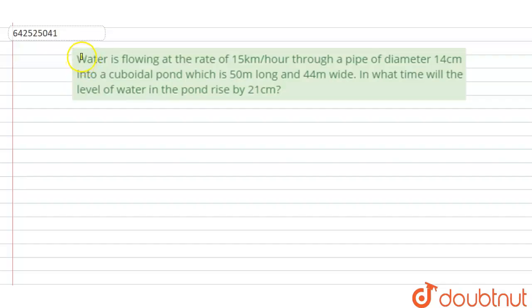Hello everyone, let's start the question. Question says that water is flowing at the rate of 15 km per hour through a pipe of diameter 14 cm into a cuboidal pond.